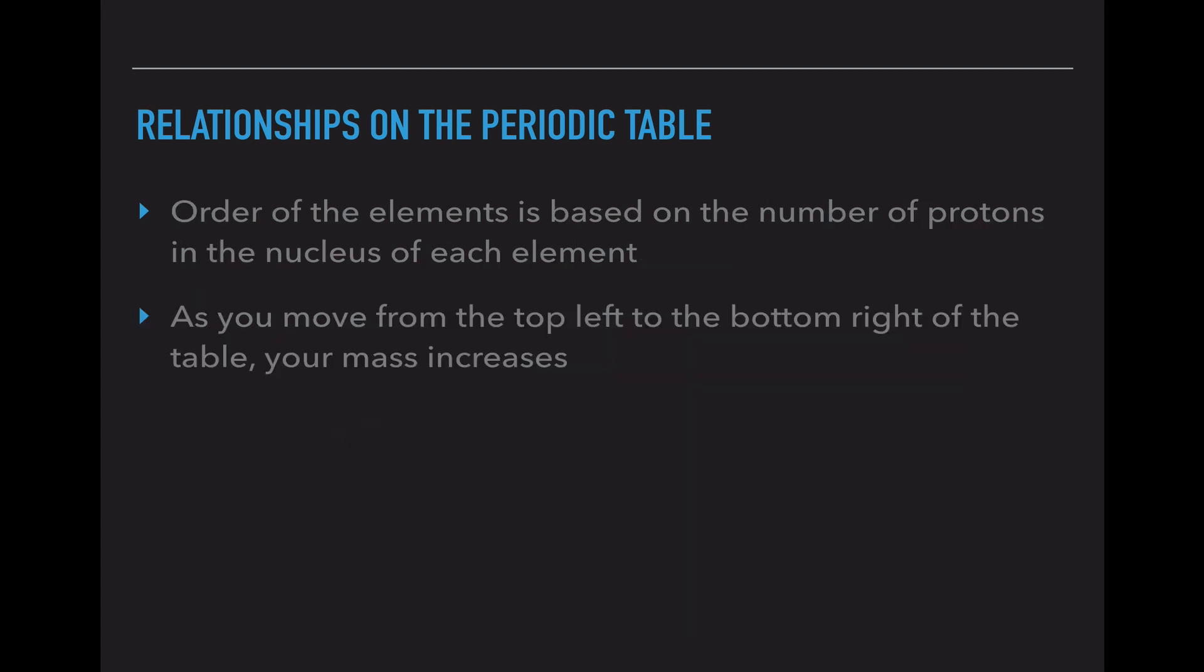So, as we move across the periodic table, the order of the elements is based on the number of protons in the nucleus of each element. Hydrogen has one proton. Helium has two. Lithium has three. And as you move from the top left of the periodic table, from hydrogen, to the bottom right of the periodic table, near the noble gases, your mass will always increase. So, for example, if you have a periodic table, you have the tall column, slightly smaller transition metals. If we are comparing an element here and here in the same period, but opposite sides of the periodic table, I'm going to want you to be able to tell me that this one is going to have heavier mass because it's farther to the right.